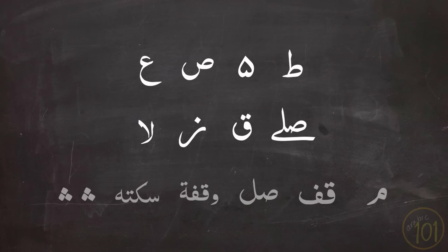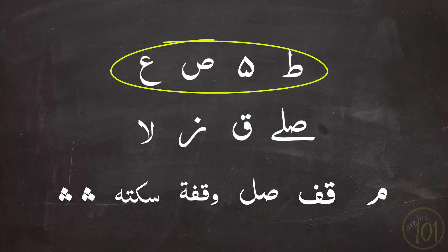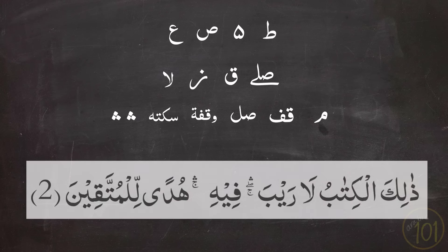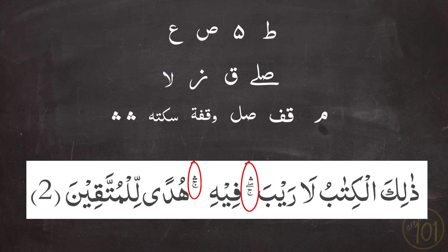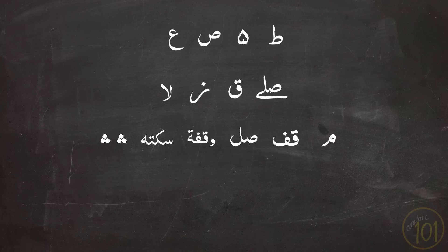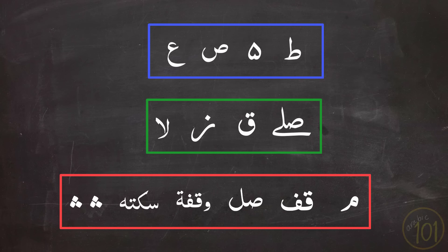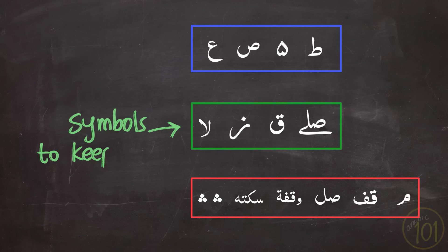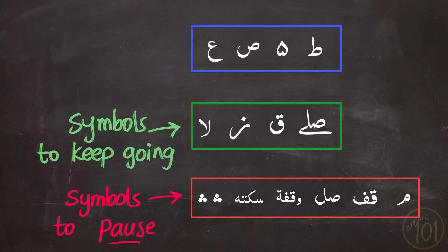These symbols should help you recite the Quran better, but some could be a bit confusing, especially these ones. So let's go through them and understand how to use them properly and what to do when they are stacked on top of each other. We'll cluster the related symbols to better understand the differences between them, viewing them in three categories: symbols that instruct you to keep on going, symbols that instruct you to pause, and a set of special symbols.